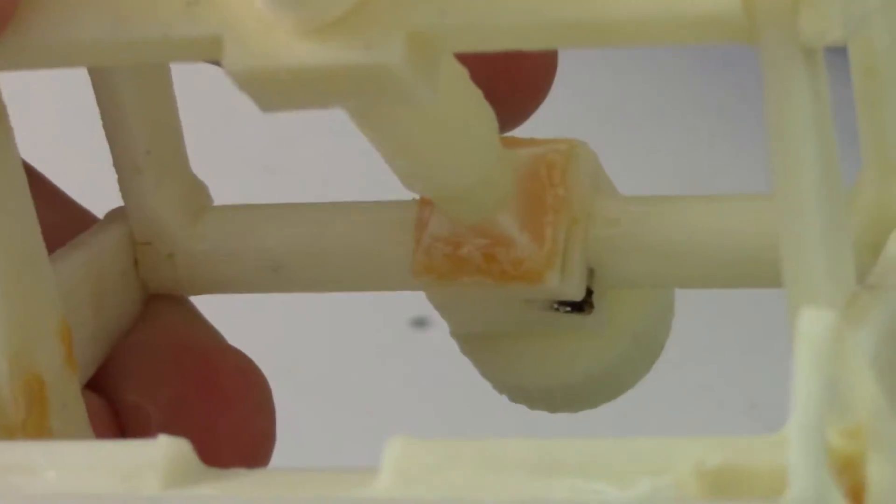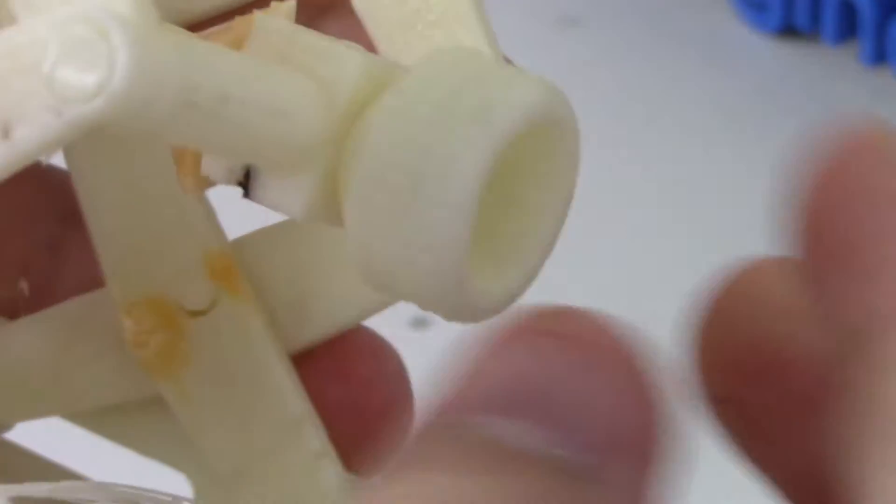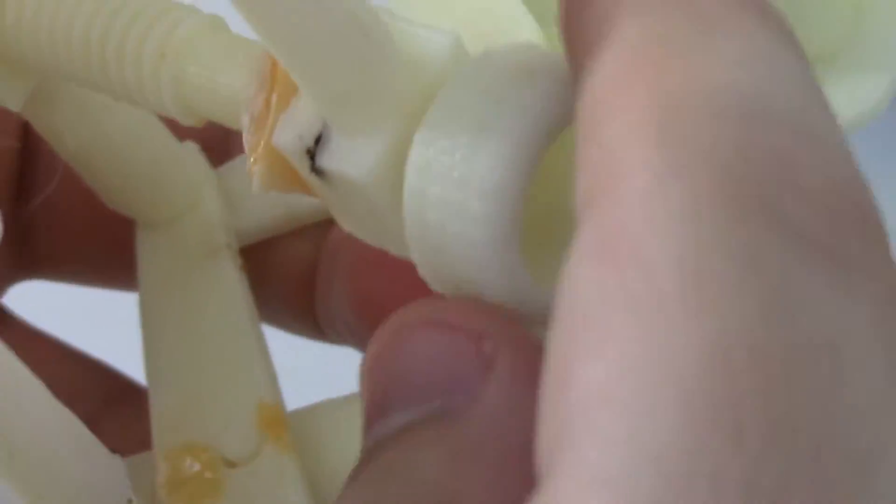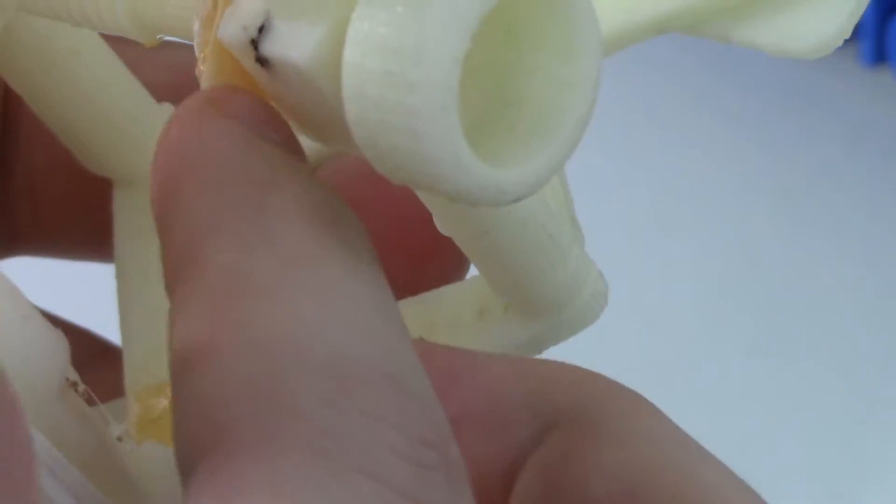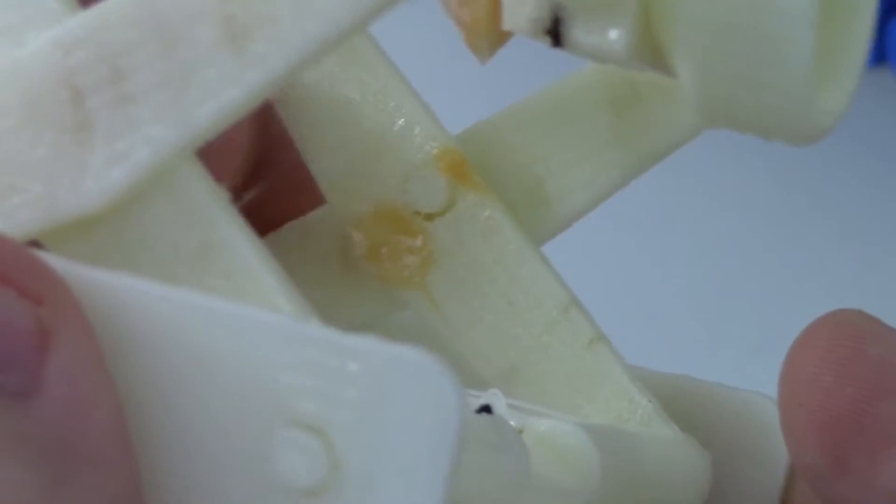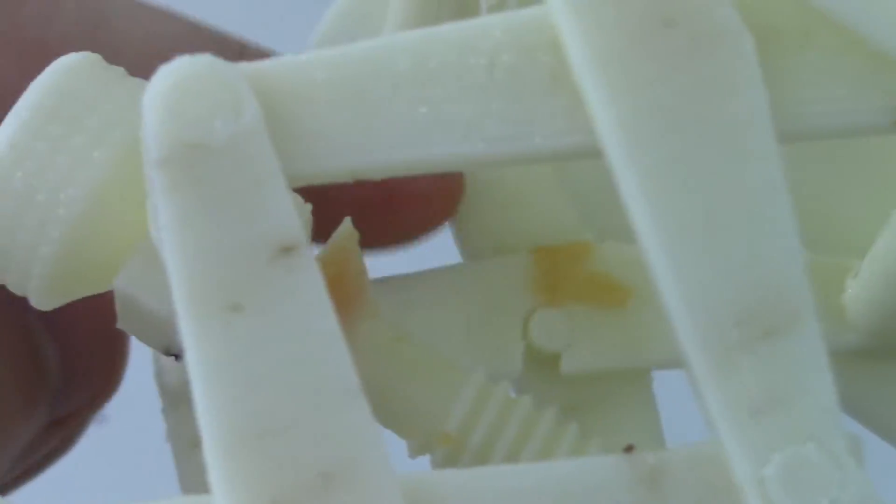Especially back here where the little lead screw is, I had this broke off when I first pulled it apart, so I had to ABS glue that. It's the same with some of these other joints, this joint and the same joints back here where I had to ABS it back together.